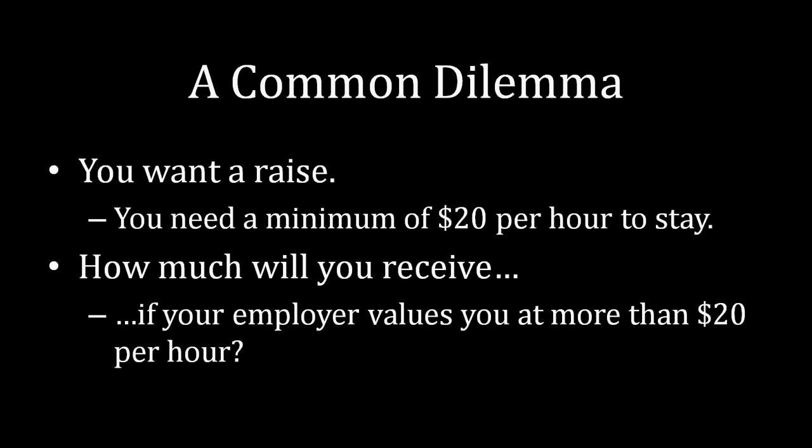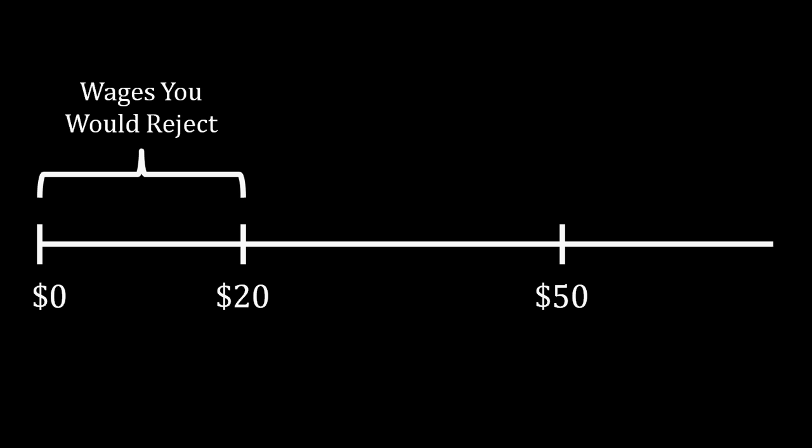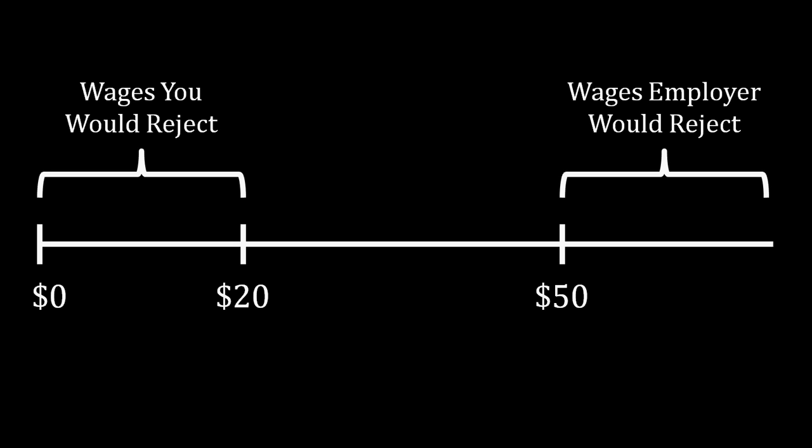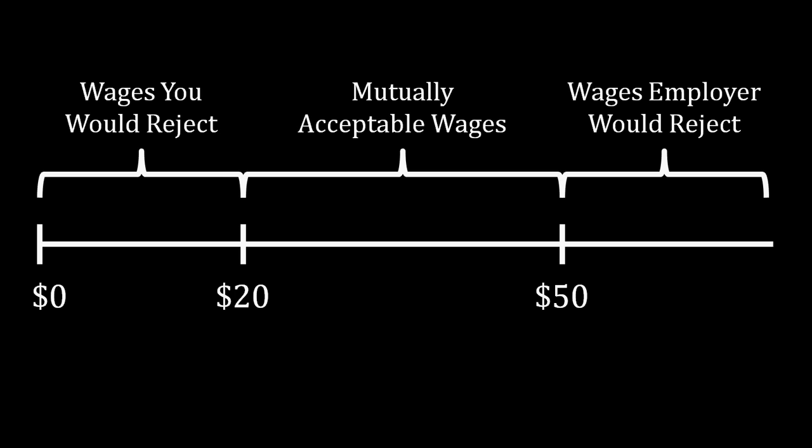The most interesting case is where your employer values you at more than $20 per hour. For the sake of illustration, let's say he actually values you at $50 per hour. Let's look at this geometrically. Any value between $0 and $20 is a wage that you would reject — you need at least $20 to stay. On the other end, any value greater than $50 is a wage your employer would reject. But any value between $20 and $50 is a mutually acceptable wage. We call the values between $20 and $50 the bargaining range.